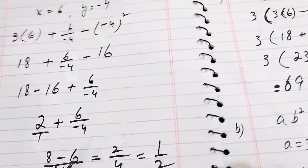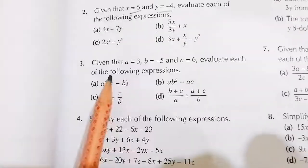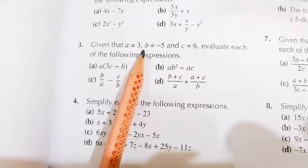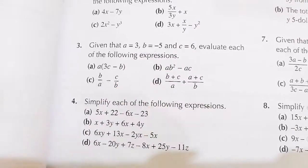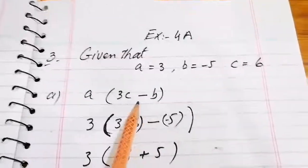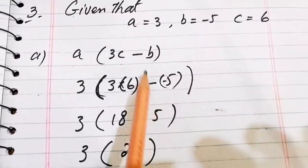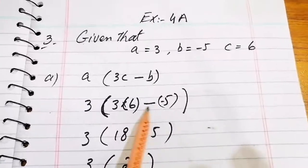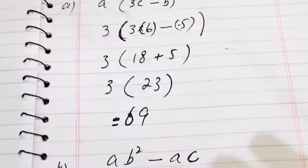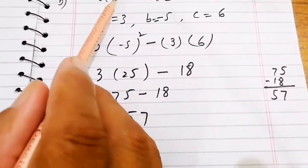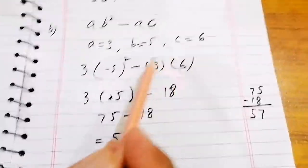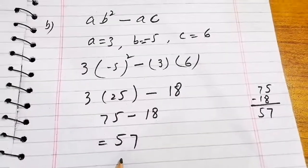Question number 3: values are given — a equals 3, b equals minus 5, c equals 6. For part (a), a times 3 minus 3c minus b: substituting, 3 times 18 minus minus 5 gives 3 times 23 equals 69. For part (b), ab squared minus ac: putting in the values of a, b, and c and calculating, the answer is 57.